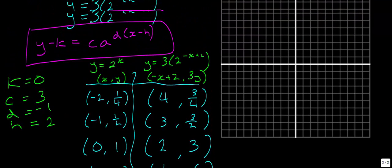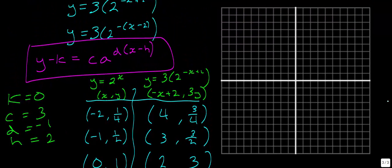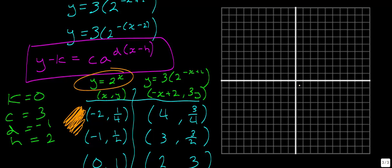Let's graph both functions. I'll use orange for the original y equals 2^x. The ordered pairs are: (negative 2, one-quarter), (negative 1, one-half), (0, 1), (1, 2), and (2, 4). Give or take, the function looks approximately like this — obviously an increasing exponential function.